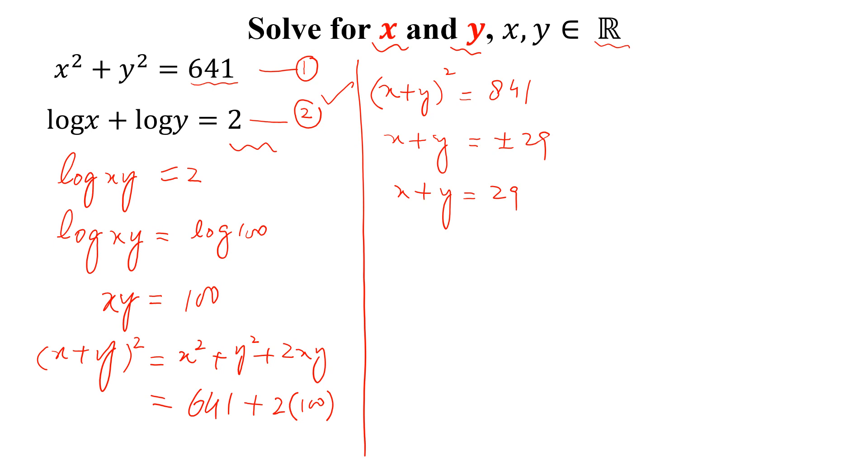Now we can write (x minus y) whole squared equal to x squared plus y squared minus 2xy, and x squared plus y squared is 641 minus 2 times 100, so this is equal to 441. By taking the square root, we can write x minus y equal to plus or minus 21.